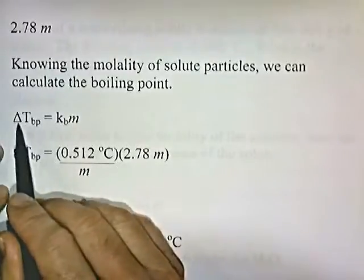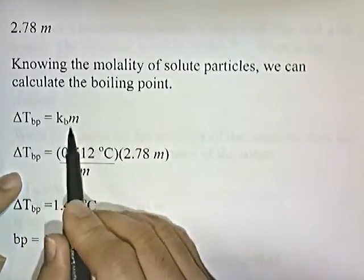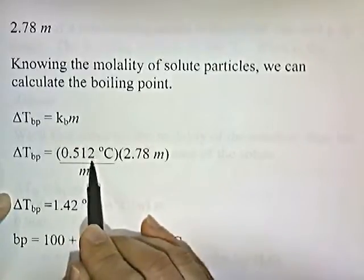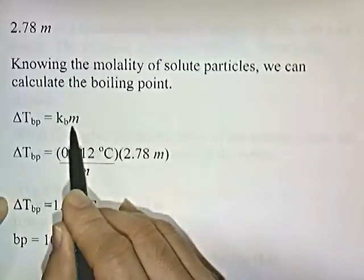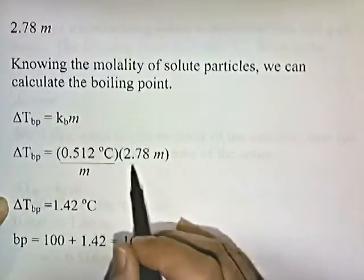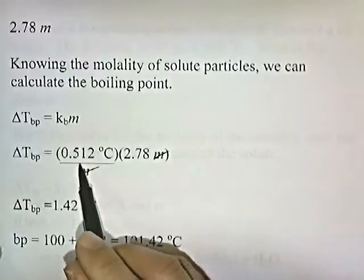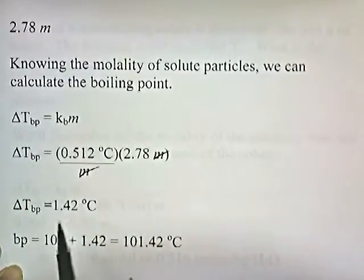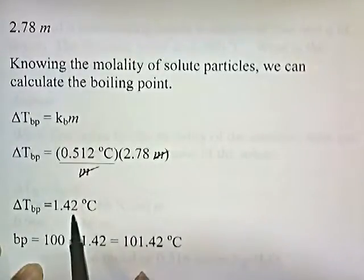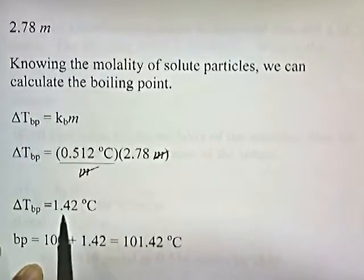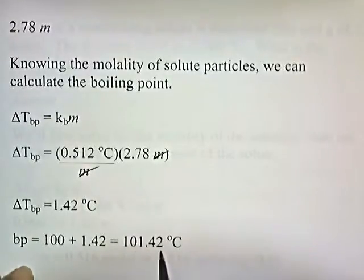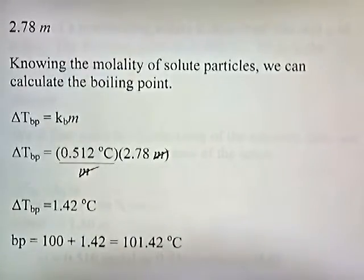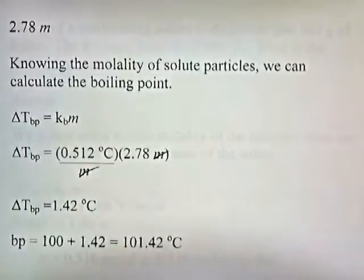Knowing the molality of solute particles, we can calculate the boiling point. The change in boiling point equals Kb times m. Kb, the boiling point constant for water, is 0.512 degrees Celsius per molal. The molality of the solution is 2.78, so 0.512 × 2.78 gives us 1.42 degrees. That's how much the boiling point changes. Water normally boils at 100 degrees, and the boiling point increases by that amount: 100 + 1.42 = 101.42 degrees Celsius. That's our answer.